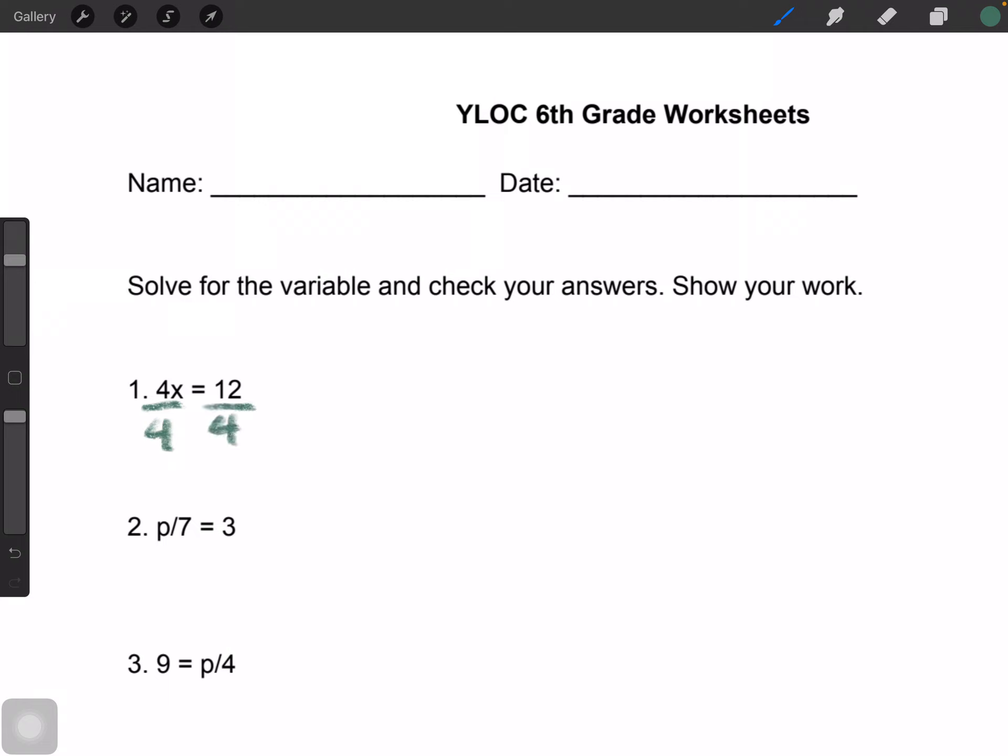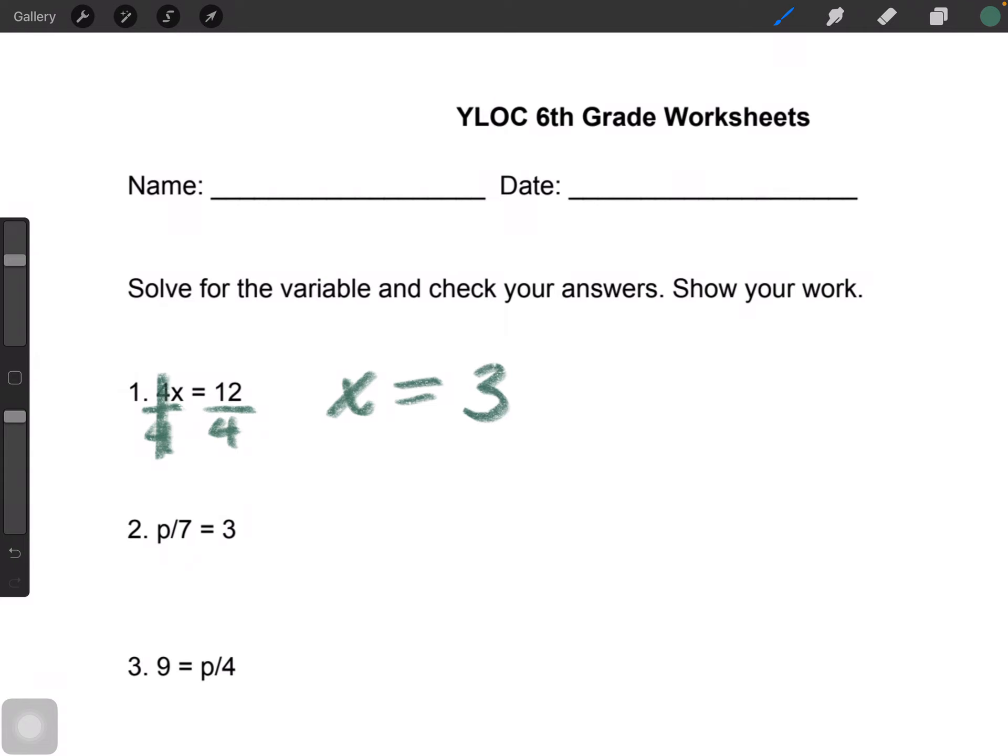Okay, so 4X divided by 4 is just equal to 1, alright? And then 1 times X is equal to X. So we have X, bring the equal sign over, 12 divided by 4 is equal to 3, and your answer is X equals 3.